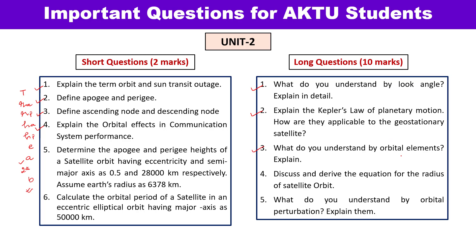Next is about orbital elements — there are six orbital elements in a set, and you need to explain all six along with their definitions. Then derive the equation for the radius of satellite orbit, which is R₀ = P / (1 + E·cos(φ₀ − θ₀)). This is a very important derivation — prepare it. Also study orbital perturbations, meaning the disturbances which may impact the satellite when it is moving in the orbit.